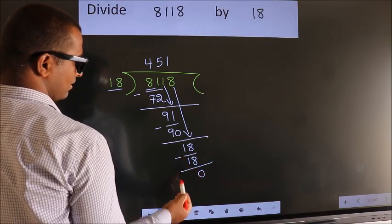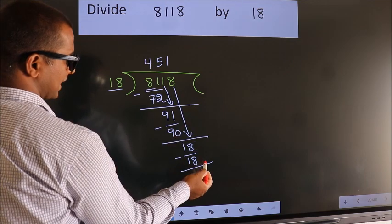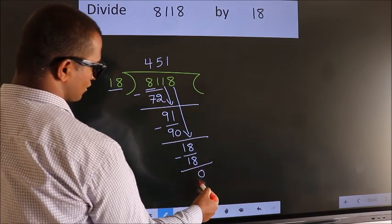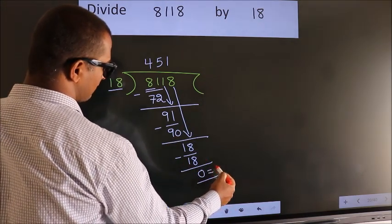We get 0. No more numbers to bring it down. So we stop here. This is our remainder. This is our quotient.